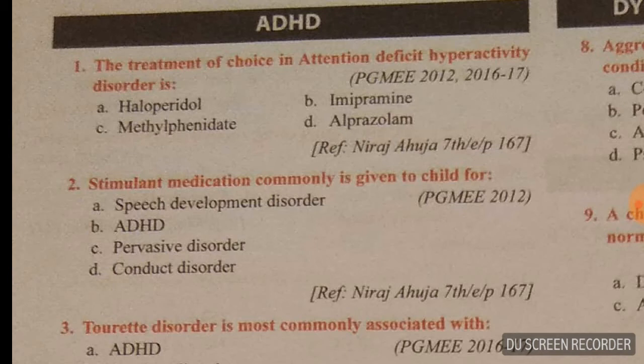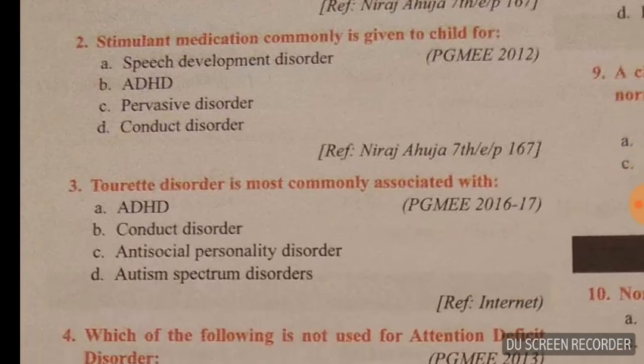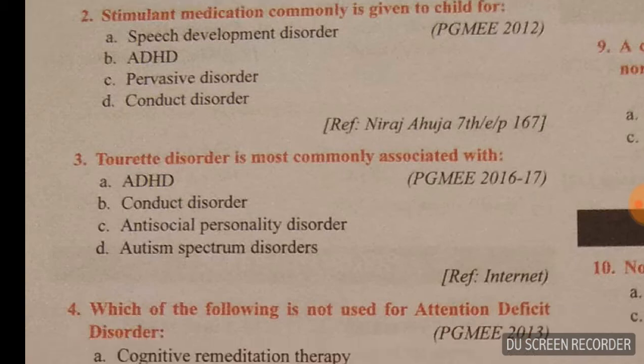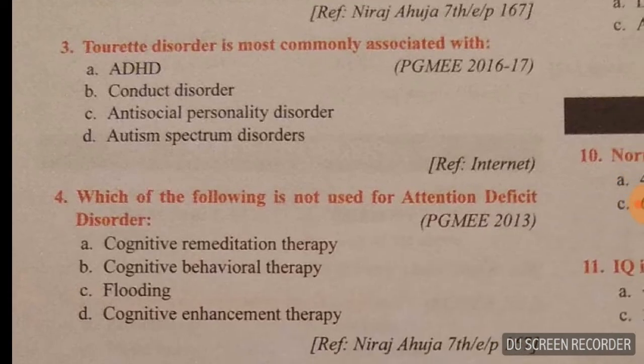Question number two: stimulant medication commonly given to a child. This is mainly given in ADHD — attention deficit hyperkinetic disorder. Option B is the right answer.